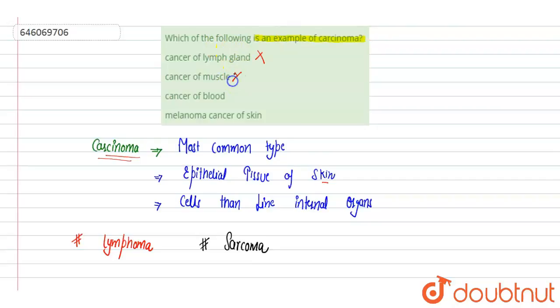Next is cancer of blood, which is called leukemia. Leukemia is the cancer of the blood, so we can say that this is also incorrect.